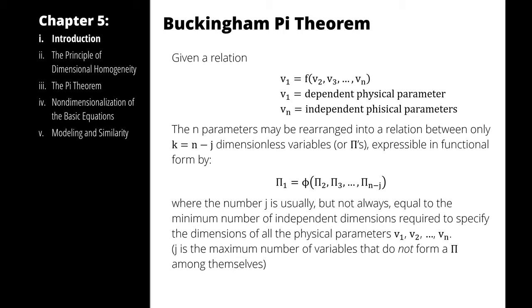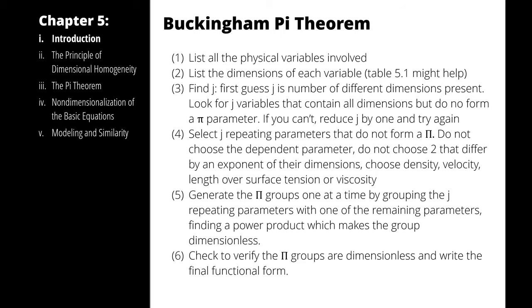The Buckingham Pi Theorem is an algorithm which generates non-dimensional parameters from a set of independent physical parameters, and it consists of six steps. The first step is to list all the physical variables, then you list all the dimensions of all the variables, then you try to identify how many repeating variables you will need to generate your non-dimensional analysis, then you select which of those variables should be those repeating variables, then you generate pi groups one at a time using each of the non-repeating variables, and then you check that your resulting non-dimensional analysis is actually dimensionless, and you write the final form.